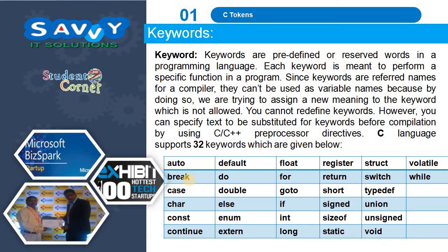The first one is Keywords. Keywords are predefined or reserved words in a programming language. Each keyword is meant to perform a specific function in a program. Since keywords are reserved names for a compiler, they cannot be used as variable names, because by doing so we are trying to assign a new meaning to the keyword, which is not allowed.